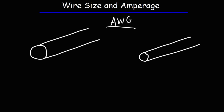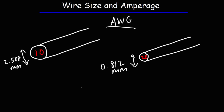The picture on the left represents a wire gauge of 10, and the one on the right represents a wire gauge of 20. What you need to understand is that the higher number corresponds to a smaller wire. A wire gauge of 10 has a diameter of about 2.588 millimeters, whereas a wire with a gauge of 20 has a diameter of 0.812 millimeters. As the wire gauge increases in number, the diameter decreases — so these two are inversely related.